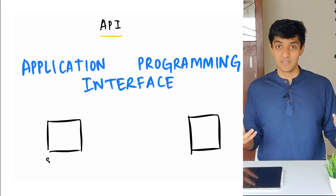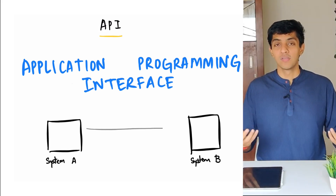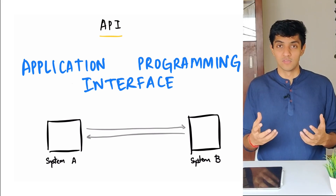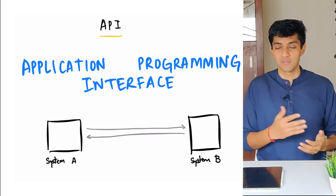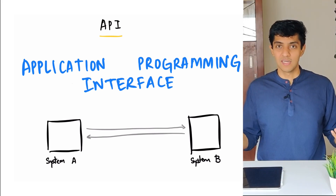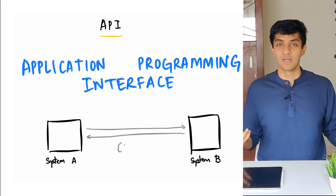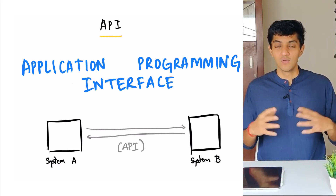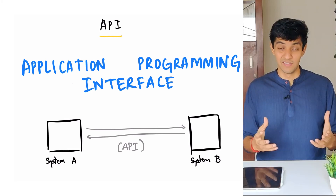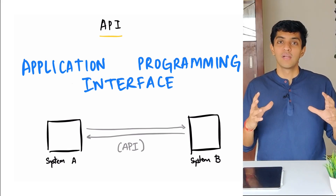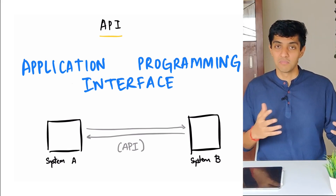system A and system B can only communicate using an API. If system A wants certain resources or wants something from system B, it can just ask system B for it, and system B will then perform those calculations and give that response back to system A. So in order for two systems to communicate, you need an API. That's a very basic definition of what an API is. Let's look at an analogy from real life.